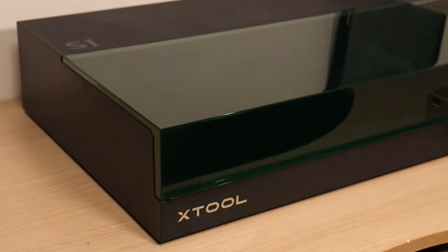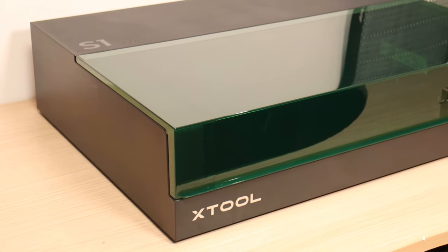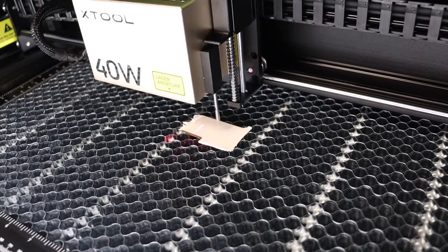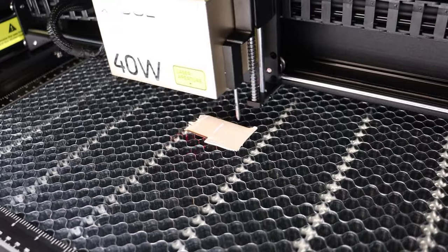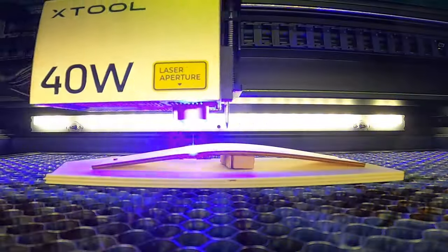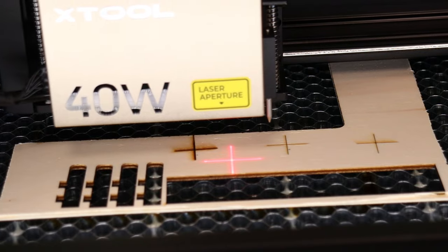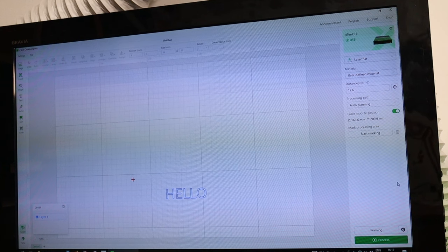The X-Tool S1 is a new generation diode laser engraver which features fully enclosed design, industrial construction, autofocus, and precise two-point positioning system. It also supports curved surface engraving. These are features no other machine currently has. Watch this video to see how it works.